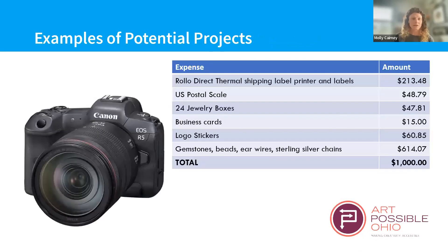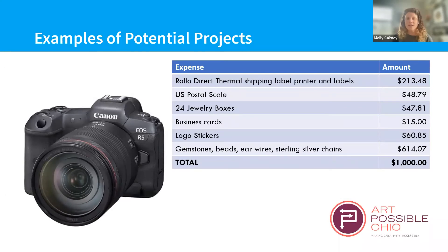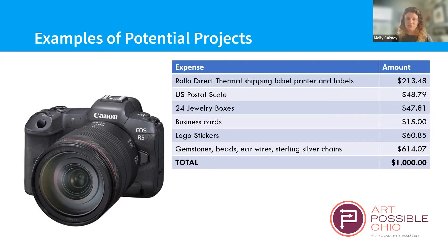Here are some examples of potential projects. You could apply to get a new camera if you're a photographer. Here's an example budget of someone who wanted to start their Etsy store — they applied for shipping materials, jewelry making materials, business cards, and logo stickers so that when they were sending out things they'd sold, they could have a really professional-looking product when it arrived. That's huge on Etsy. She priced everything out and this was a grant that was funded.